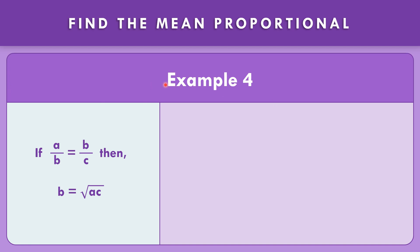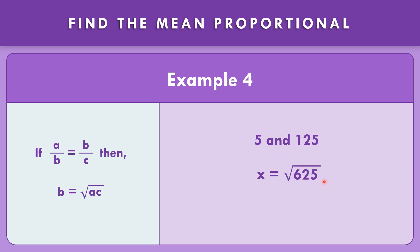For number 4, the numbers are 5 and 125. So it means x is equal to the square root of 5 times 125, that is the square root of 625. The square root of 625 is exactly equal to 25. So x equals 25. The mean proportional of 5 and 125 is equal to 25.